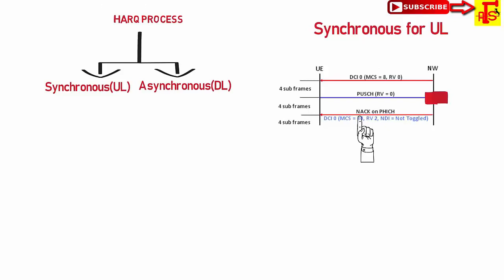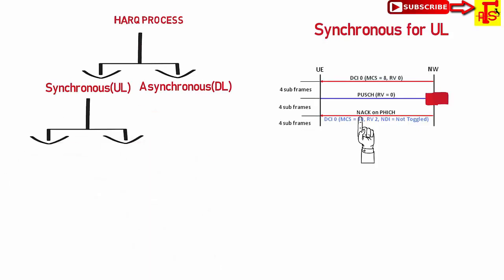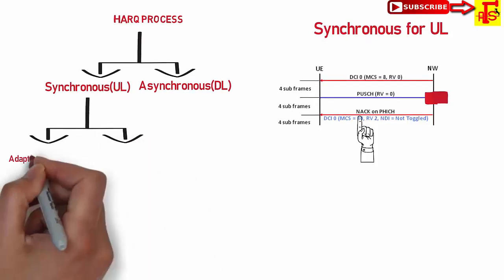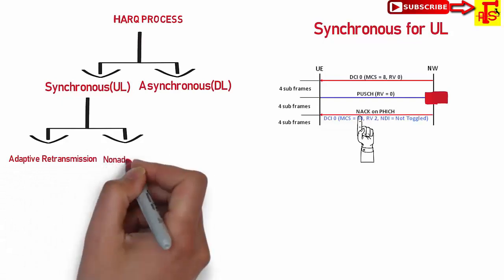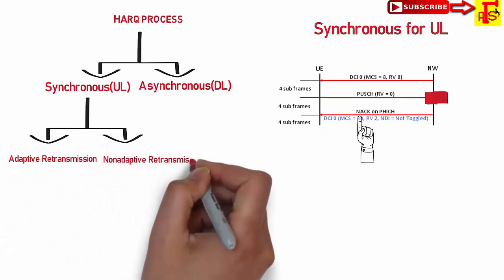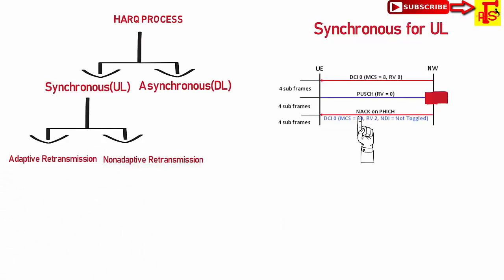HARQ is of two types: Synchronous Uplink and Asynchronous. Synchronous is used for Uplink and Asynchronous for Downlink data. Synchronous is again two types: adaptive transmission and non-adaptive transmission. Retransmissions are scheduled at fixed time intervals. A specific HARQ process is used in a specific subframe, with every 8 subframes per UE process ID repeating.